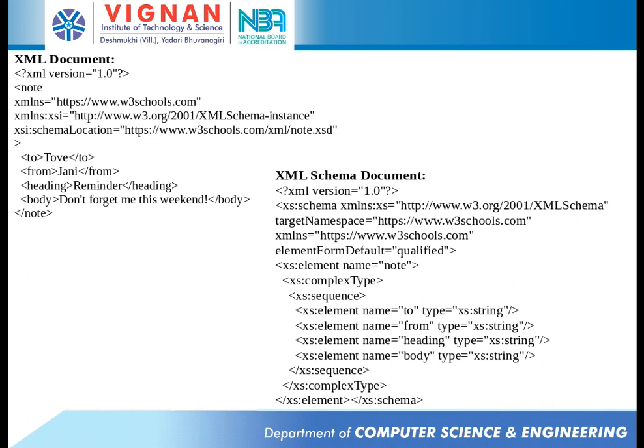This slide will give you a complete picture of how XML schema is structured. When writing a schema document there is a root element called 'schema'. The schema element, complexType, sequence — all these are tags which are part of the predefined namespace for XML: 'xs', pointing to www.w3.org/2001/XMLSchema. We then create our own namespace called w3schools.com, which is why the target namespace is w3schools.com.